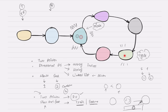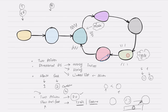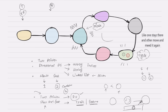When the two pointers meet to detect the cycle, you can also find the length of the cycle. Once they are both at that meeting node, let one pointer keep moving forward — one, two, three, four, five — until it meets the stationary pointer again. That count gives you the length of the cycle.